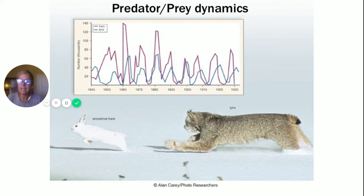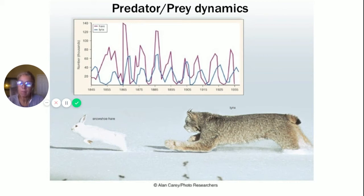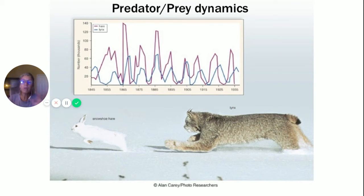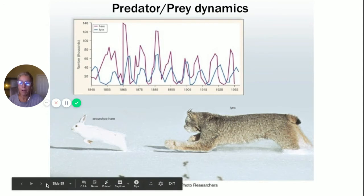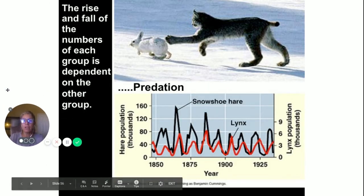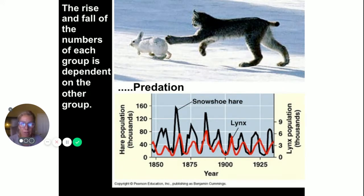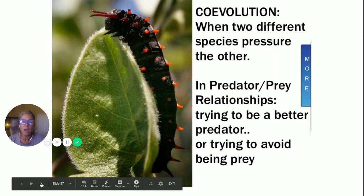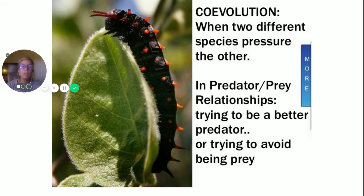The snowshoe hare has adaptations — he's white for camouflage, fast, and has senses to detect the lynx. The lynx is large, warm, and has good eyesight to spot the hare. They push each other to be better predators or worse prey — the rise and fall of the numbers of each group is dependent on the other. This pushing one another is called co-evolution: when two different species pressure the other. In predator-prey relationships, you're trying to be a better predator or avoid being prey.